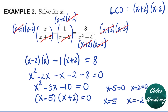We check for extraneous solutions. Plugging in x = -2 into the original equation makes the denominators of the first and third fractions equal to zero, which is undefined. Therefore, the only solution is x = 5. x = -2 is an extraneous solution.